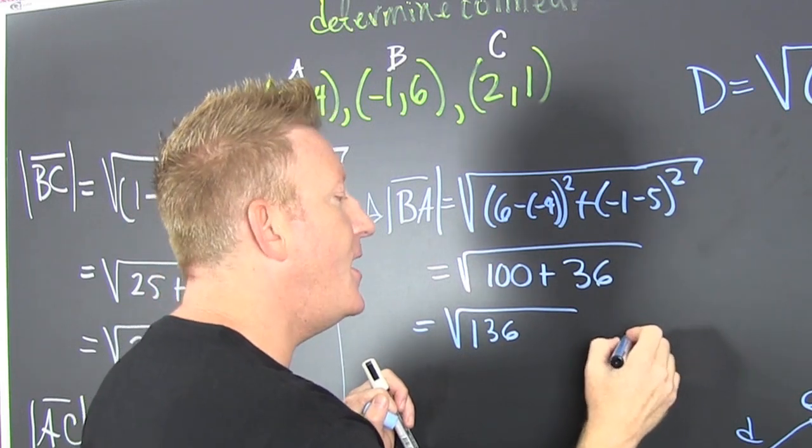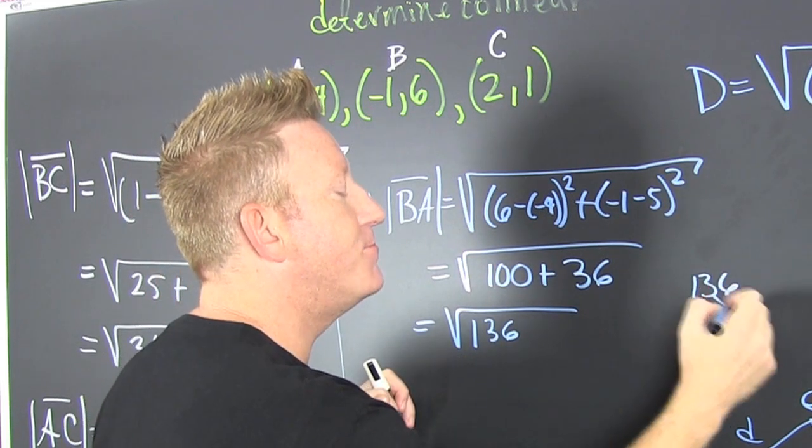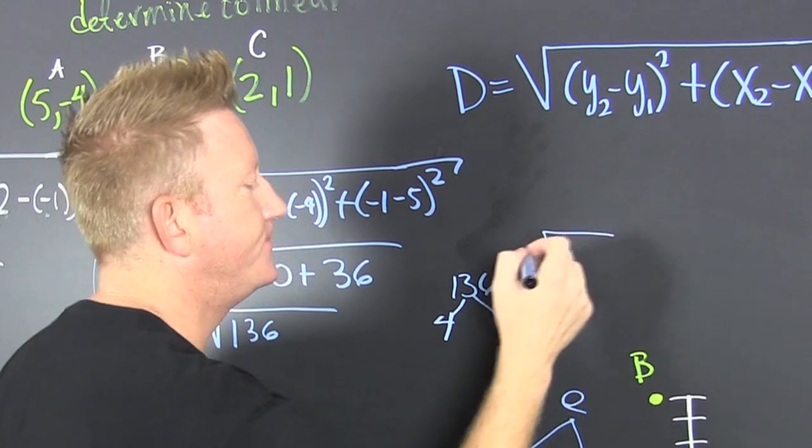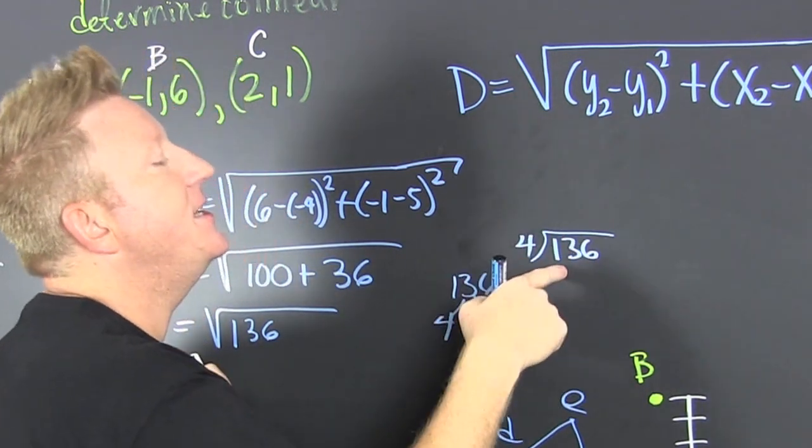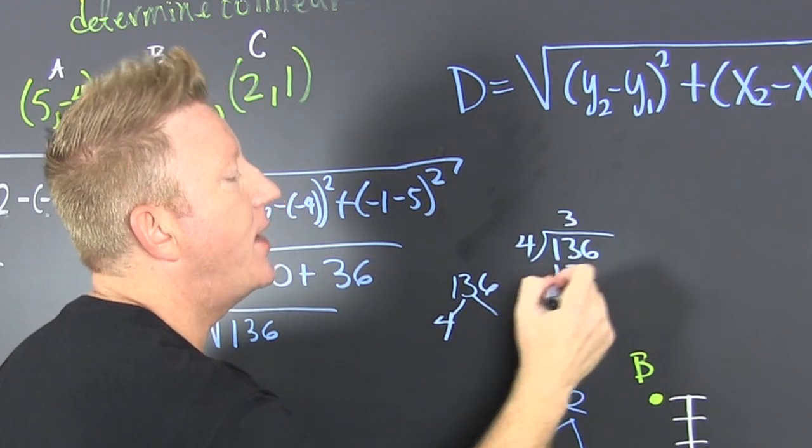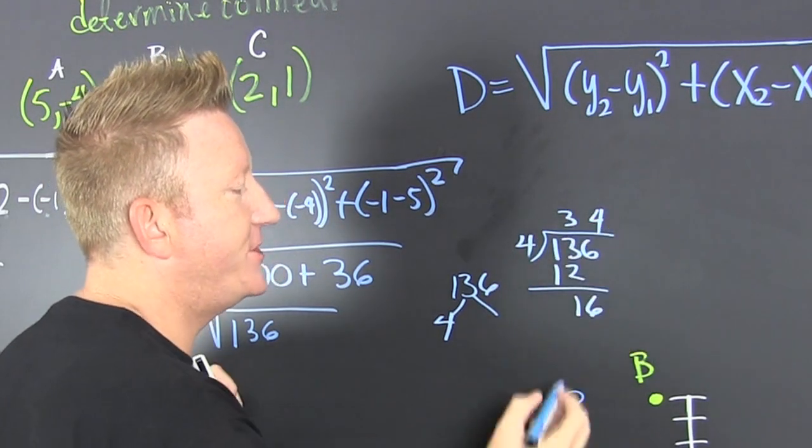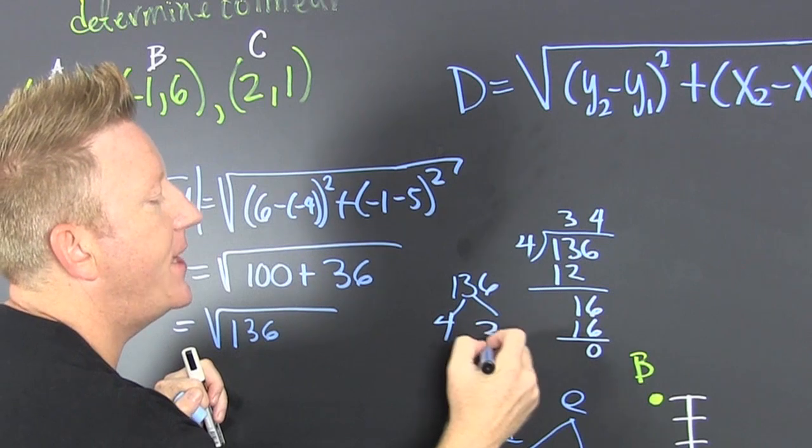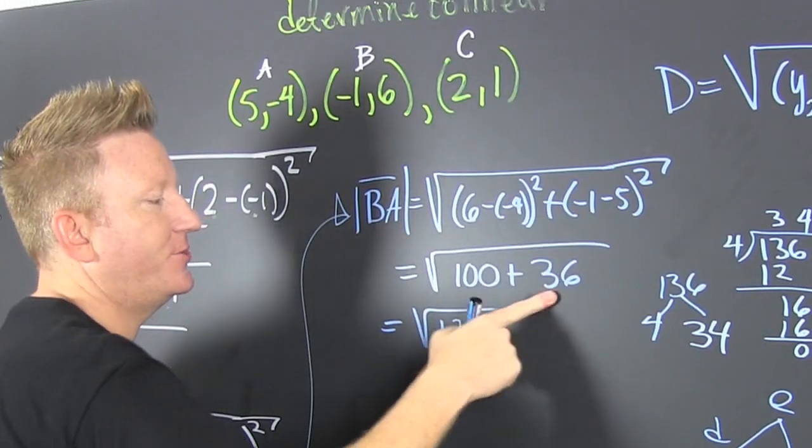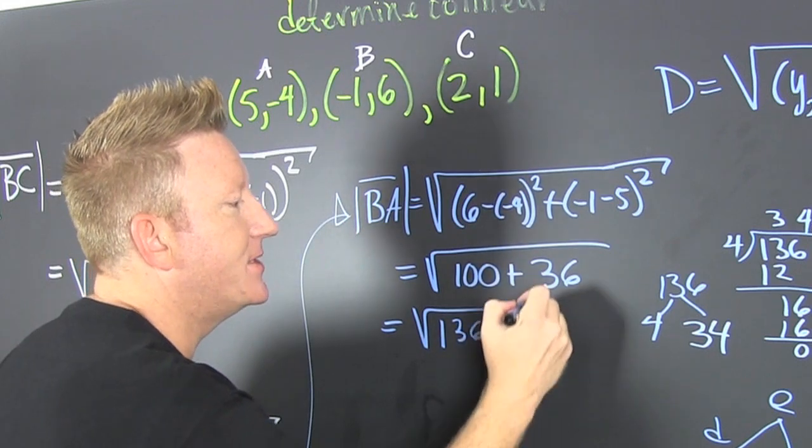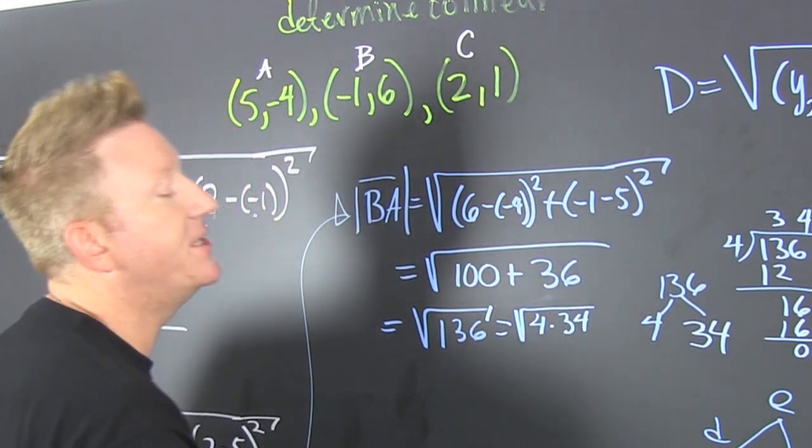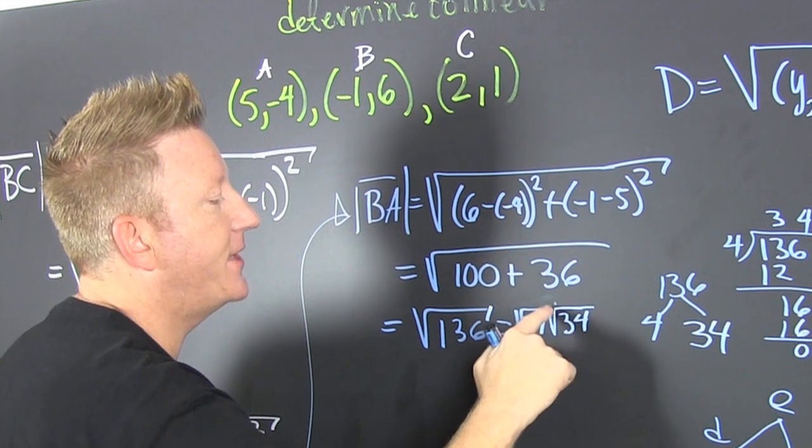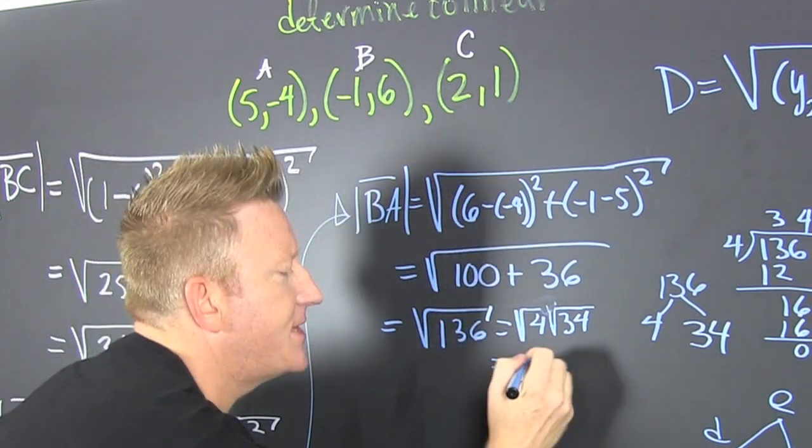I bet there's probably a four in there. 136 divided by four, four goes into thirteen three times, that's a 12, then that's a one and a six and a four. Look at that, it works out. So that's a four and a 34. Shorten up your root, that's going to be the square root of four times 34, which is the square root of four, and the root of the product is the product of the roots. That's a two root 34.